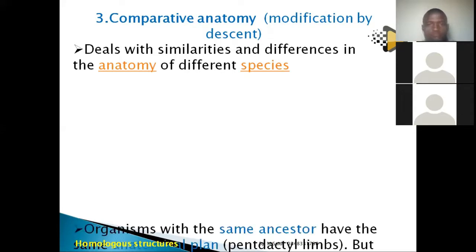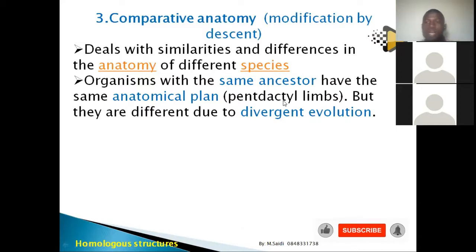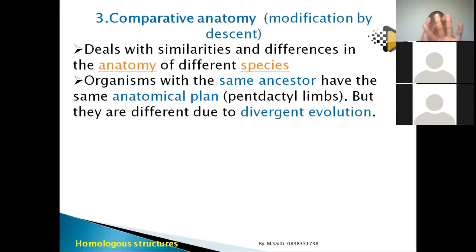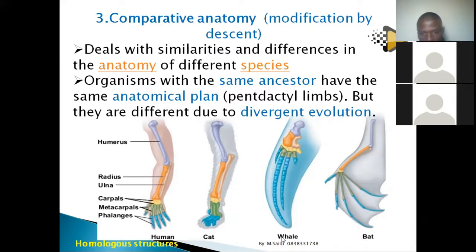Organisms with the same ancestor share the same anatomical plan — this is called pentadactyl limbs. 'Penta' means five and 'dactyl' relates to digits. Your hand has five digits, your feet have five toes, and if you look at a monkey or a human in this picture, they also have five digits.